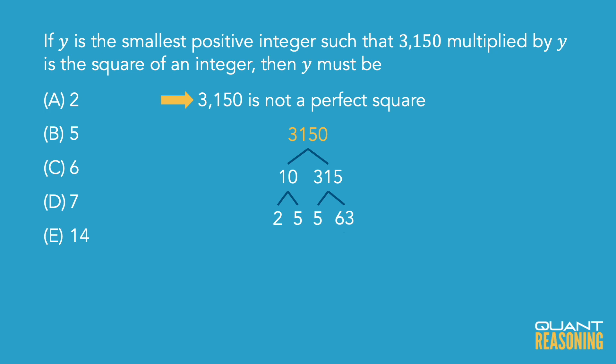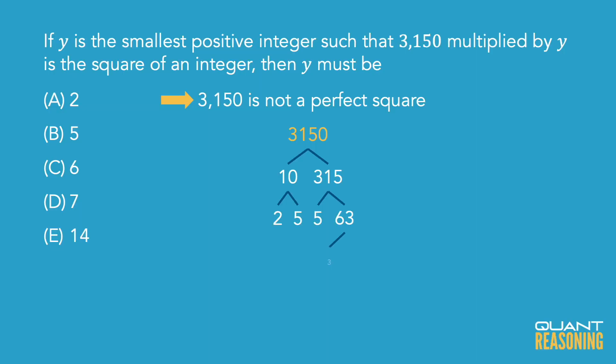What about 63? Does that have any obvious factors? Yeah — 60 and 3, each is a multiple of 3. There are 20 threes in 60, plus another 3 in 3, so 21 times 3. And the factors of 21 are 3 times 7.